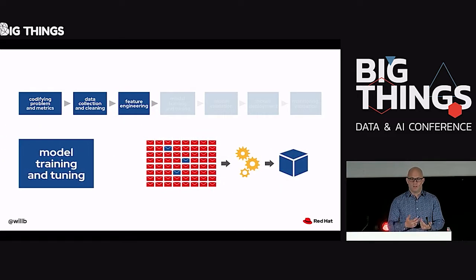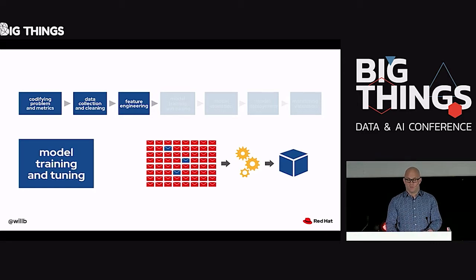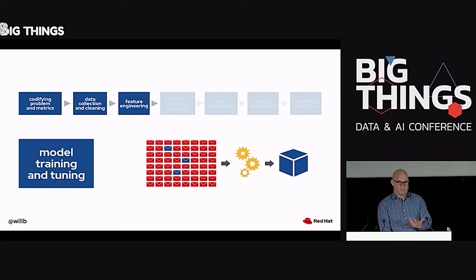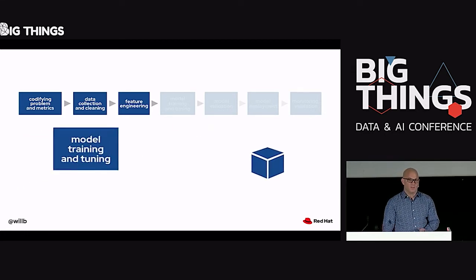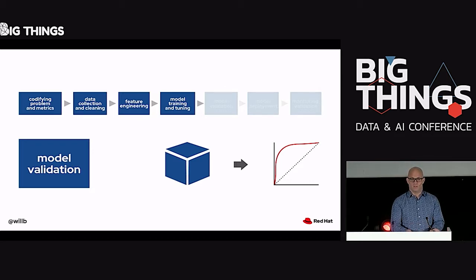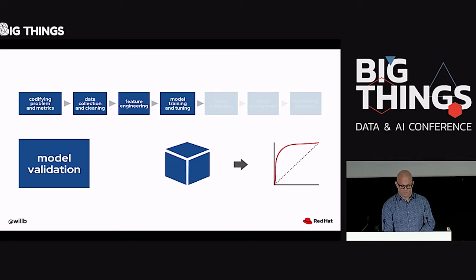Once I have those features, I pass them into a model training algorithm, which identifies good trade-offs in summarizing the data — basically choosing a function to say whether a feature vector corresponds to a legitimate message or not, by minimizing some error metric. Once I have a trained model, I'll want to test how well it performs on data it's never seen. If I just look at how well it works on data it knows the answer to, it's possible I could just memorize that data and have a model that's not good for anything in the real world. By checking it on unseen data, we can make sure it's generalized.